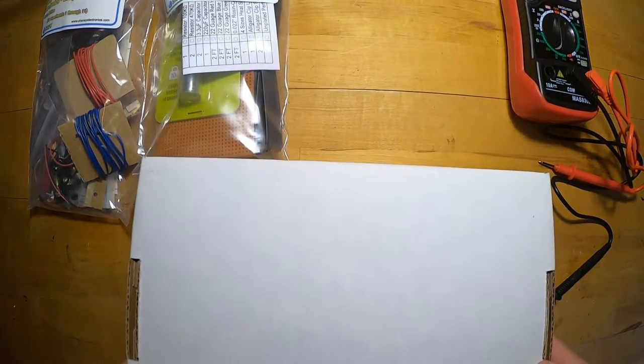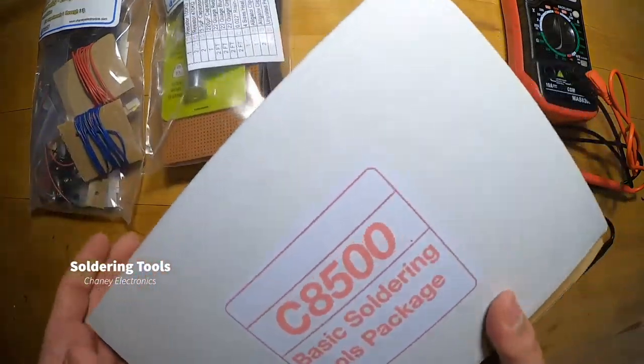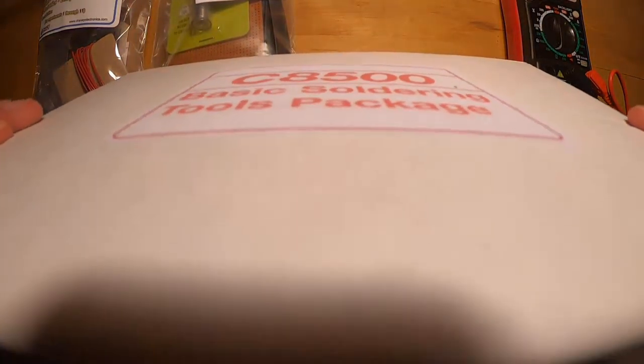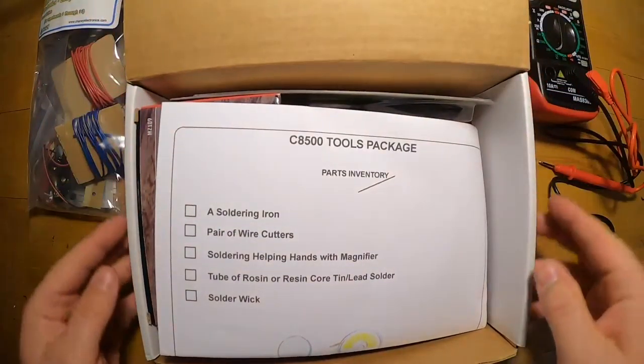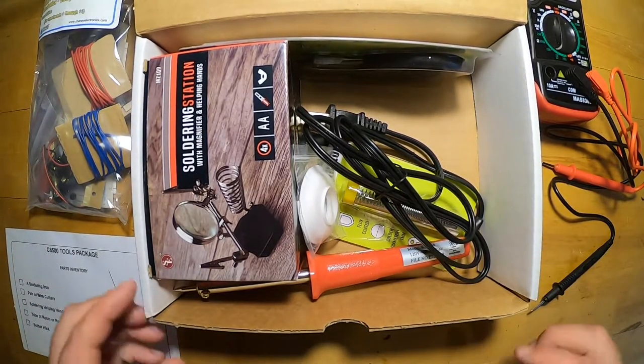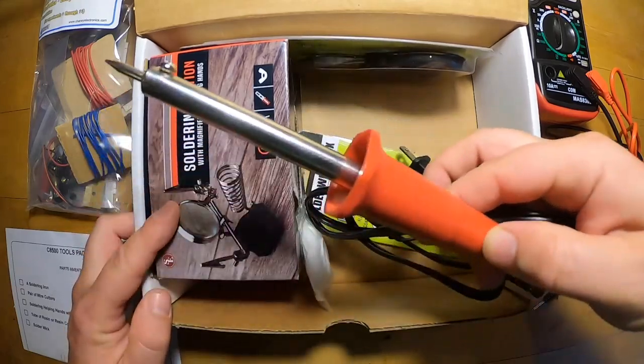Let's look at the soldering tools package. Everyone's going to need some soldering tools. You can obtain these from Cheney Electronics, or you might have them on your own or be able to get them from a hardware store. First is the soldering iron - you can see there in red right up front - and the soldering station. You can see a picture of what that looks like.